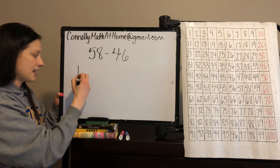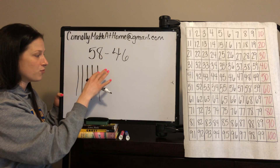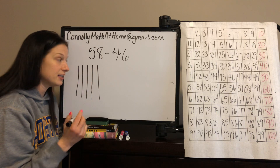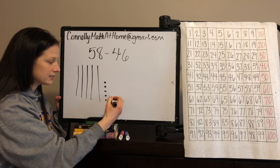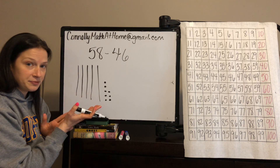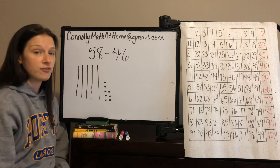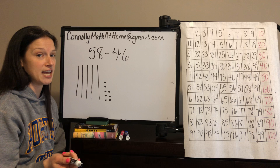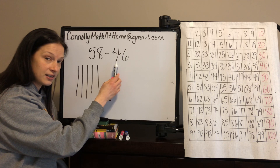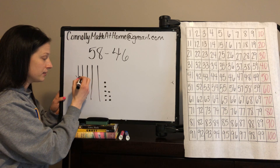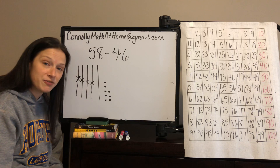I'm going to represent 58: five long strips of 10 — 10, 20, 30, 40, 50 — and eight singles: 1 through 8. Five groups of 10 is the same as 50. We can cross off all 40 at once. If I have five groups of 10 and subtract four groups of 10, can you predict how many groups of 10 are left? 5 groups of 10 minus 4 groups of 10 — I'm sure you could predict there's just one group of 10 left.